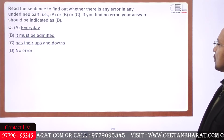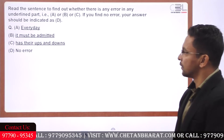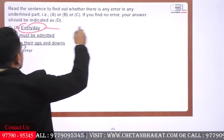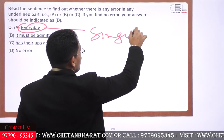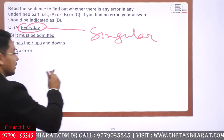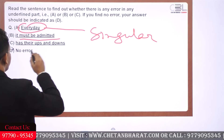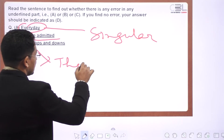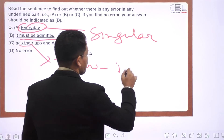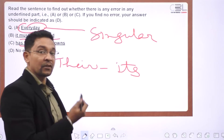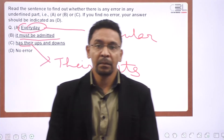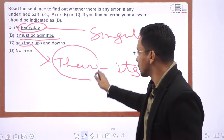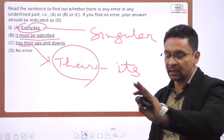Now we need to pick the error if there is any. 'Every day, it must be admitted, has their ups and downs.' Every day is singular — not days, we are talking about singular. 'Must be admitted' is fine. But 'has their' — what about the pronoun 'their'? Shouldn't it be 'its'? Every day is one, so it cannot have 'their.' The subject must agree not only with the verb, but the pronoun should also be in accordance with the subject — every time.